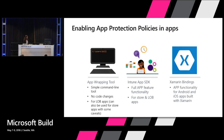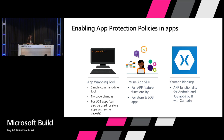The App Wrapping Tool is a command-line tool available for Android and iOS — no code changes required, used for LOB apps. If you want to release to the app store, we recommend the Intune App SDK, which has more functionality for multi-identity scenarios and can be used for both store and LOB apps. The Xamarin bindings provide app protection functionality for Xamarin-based apps — we released them last month for iOS and Android.